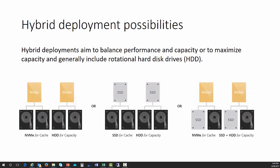Hybrid deployments are possible as well. They aim to balance performance and capacity, or to maximize capacity, and generally include rotational hard disk drives. For example, NVMe can serve as cache with hard disk drives for capacity, or SSDs for cache with hard disk drives for capacity, or NVMe plus SSDs and hard disk drives for capacity — depending on how you want it configured.